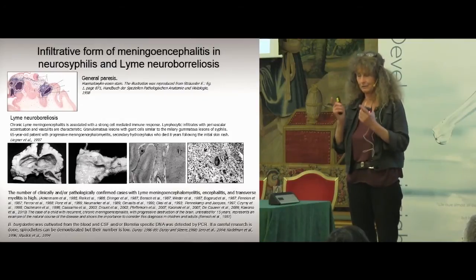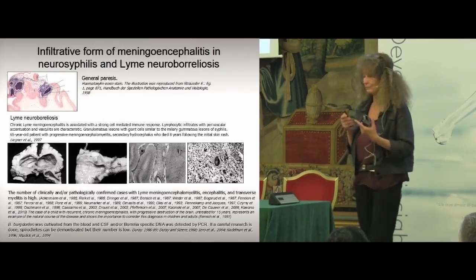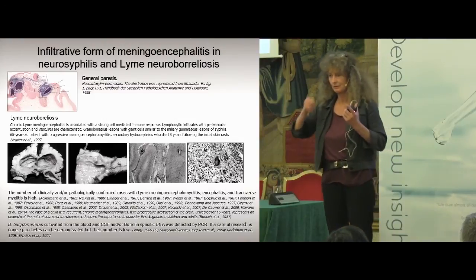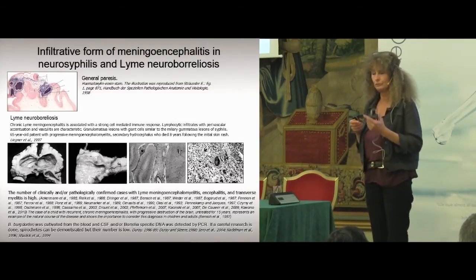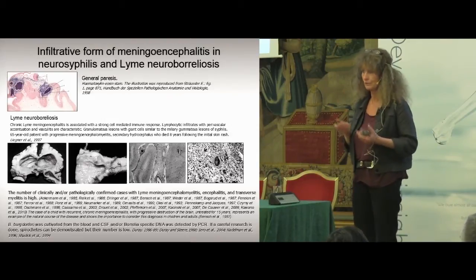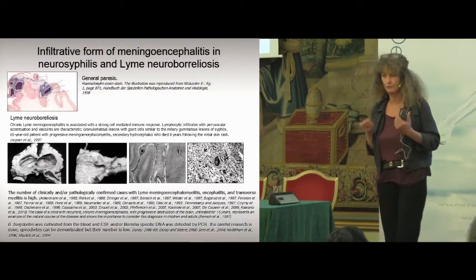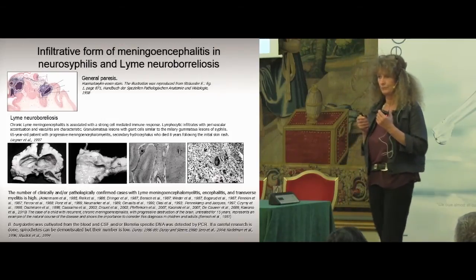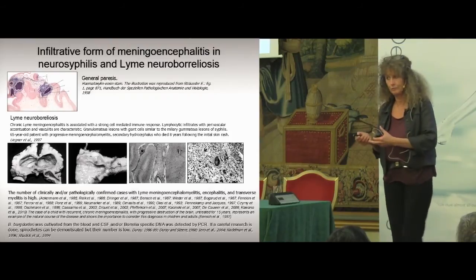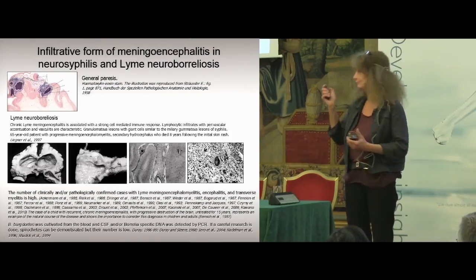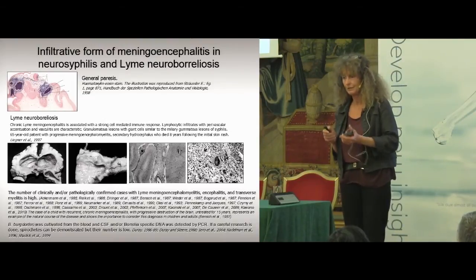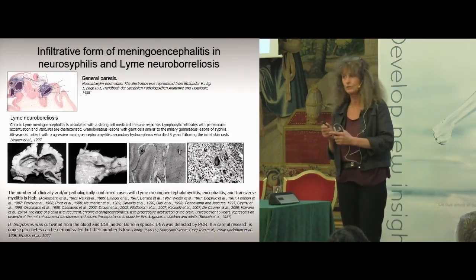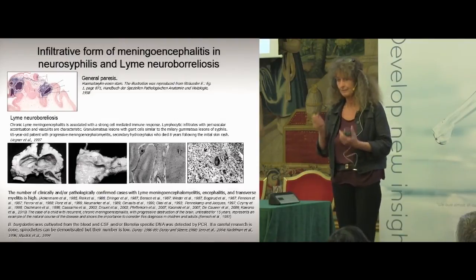One is the classical, typical meningoencephalitis in which you have a very strong lymphoplasmocytic infiltration. When you see a section, you have the classical picture with many nodules of lymphoplasmocytic infiltration, or vasculitis, or other signs of very well-known cellular inflammation. However, there is another form, called the atrophic form of general paresis. In this atrophic form, you have no lymphoplasmocytic infiltration, but on the other side, you have very strong tissue atrophy, brain atrophy, which will lead to dementia.